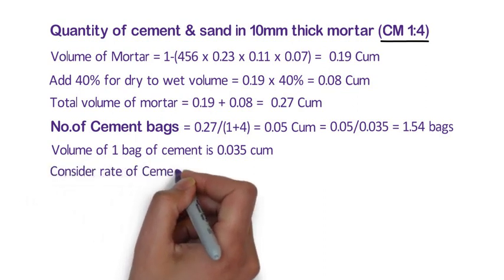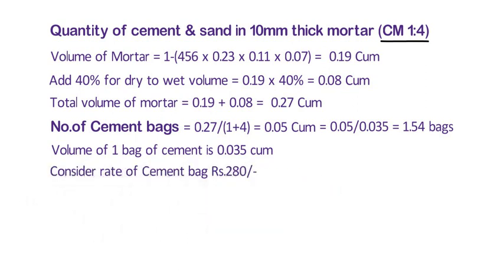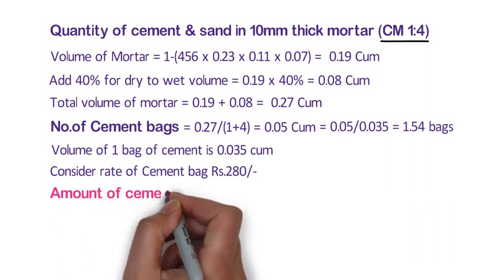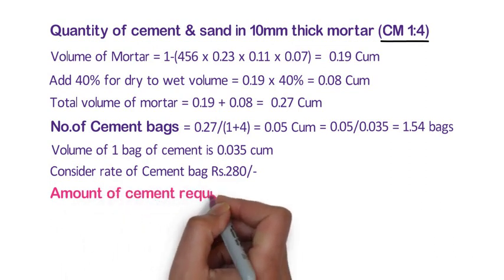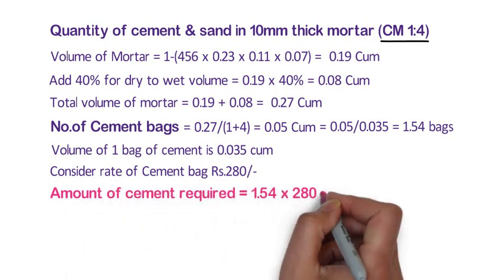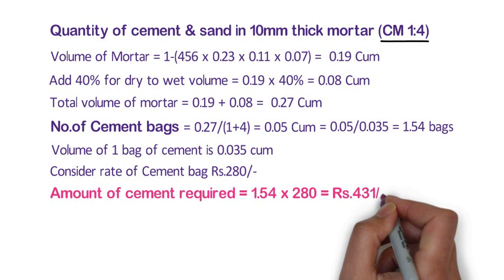We will consider a rate of cement bag at 280 rupees. Amount of cement required shall be 1.54 x 280 is equal to 431 rupees.